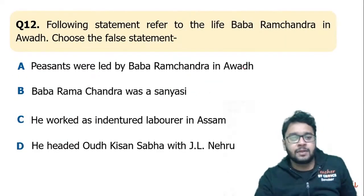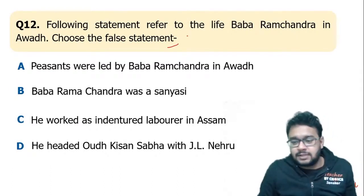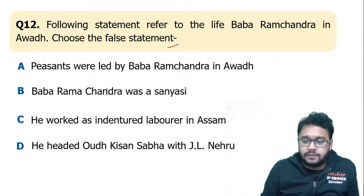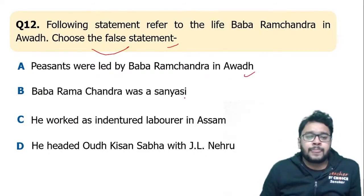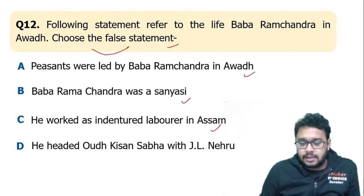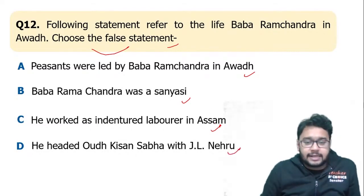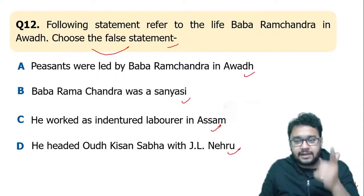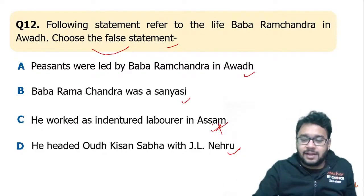The question on Baba Ram Chandra in Awadh: which of the following statements is false? The options were — peasants were led by Baba Ram Chandra in Awadh, Baba Ram Chandra was a sanyasi, he worked as an indentured laborer in Assam, or he headed the Awadh Kisan Sabha with Jawaharlal Nehru. The incorrect statement is option C — Baba Ram Chandra never worked as an indentured laborer in Assam.